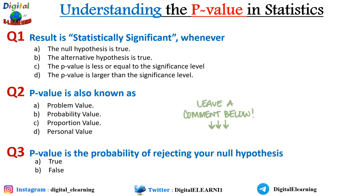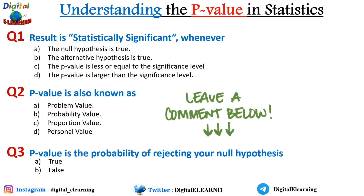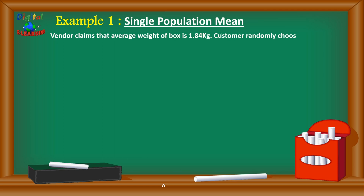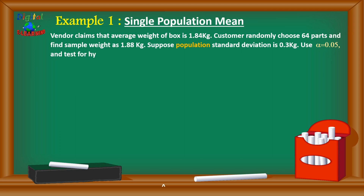Let's take the first example of single population mean. A vendor claims that the average weight of a box is 1.84 kg. A customer randomly chose 64 parts and found the sample weight to be 1.88 kg. The population standard deviation is 0.3 kg, with alpha at 0.05 as the level of significance. We need to test the hypothesis that the true mean of the shipment is 1.84 kg.